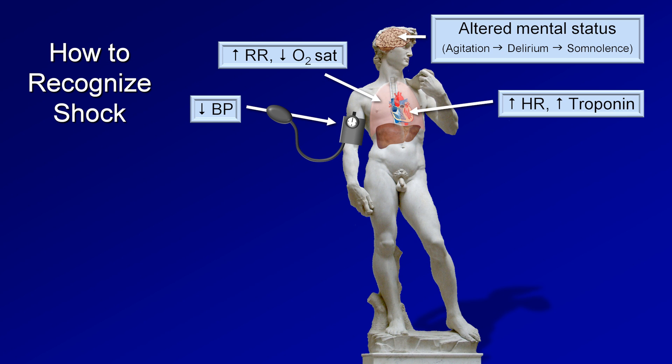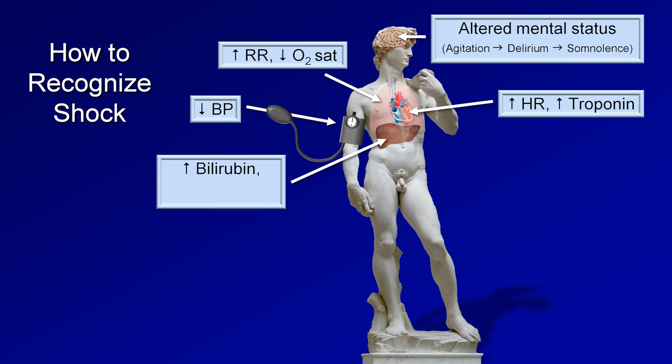Affecting the liver, patients can develop a mildly elevated bilirubin either from reduced blood flow to the liver or from passive hepatic congestion from a failing heart. When poor blood delivery is the primary problem, patients can also develop elevated transaminases. When the AST and ALT rise over 1000 from hypoperfusion, it's frequently referred to as shock liver. Amazingly, most patients' hepatic function will fully recover over days to weeks once normal perfusion is restored.